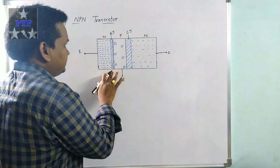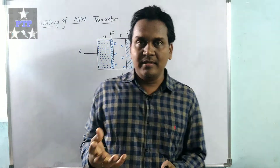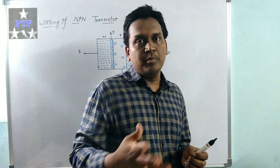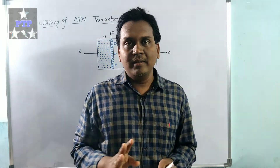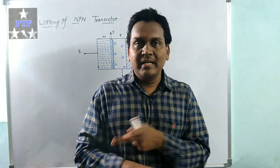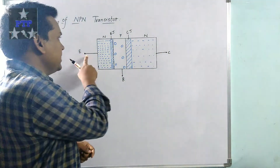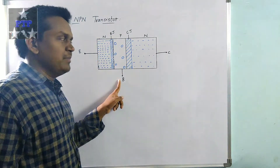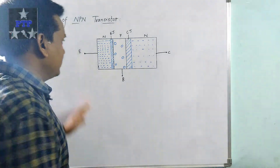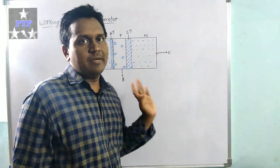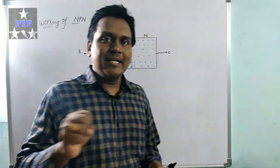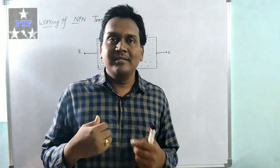Coming to how to start a transistor — in a normal circuit there may be one input and one output, or two inputs and two outputs. But in a transistor there are three terminals: emitter, base, and collector. Each terminal can act as an input or output. That is why the transistor is a different device. To start this transistor, we have to connect it with a battery. By connecting with a battery, the transistor starts to work.